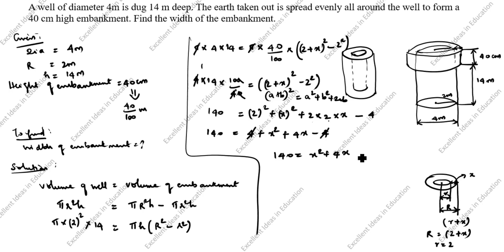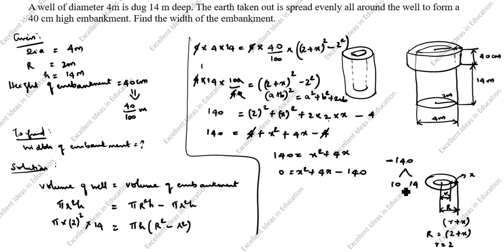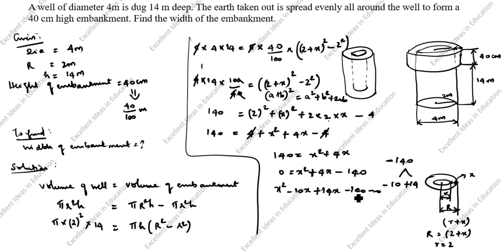Bringing everything to one side: 0 equals x squared plus 4x minus 140. Now we simplify minus 140. We split it: 10 times 14 is 140. Since the coefficient of x is plus 4, we put plus 14 and minus 10 — minus 10 plus 14 is plus 4. So we write: x squared minus 10x plus 14x minus 140 equals 0.